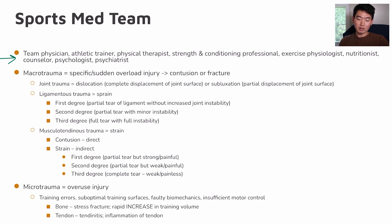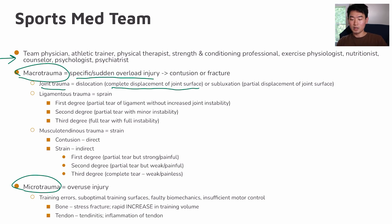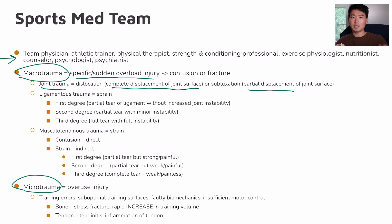Let's take a closer look at macrotrauma versus microtrauma. Macrotrauma is a specific or sudden overload injury that causes a contusion or a fracture, for example. Looking at joint trauma, dislocation could happen — that's a complete displacement of joint surface — or subluxation, which is a partial displacement of the joint surface.